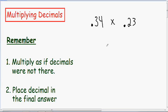So now I want to go over a tricky multiplying decimal problem. Here we have 0.34 being multiplied by 0.23. So now I'm going to set this up so we can multiply these together. We have 0.34 being multiplied by 0.23.